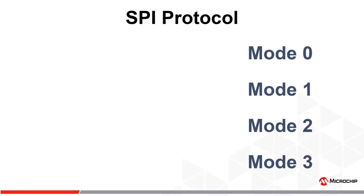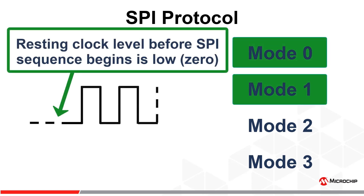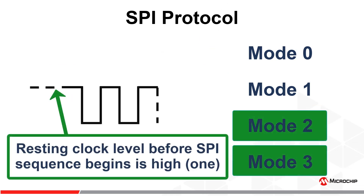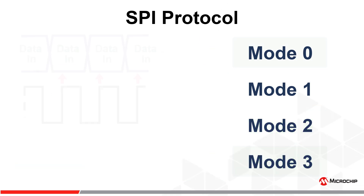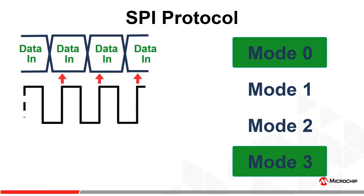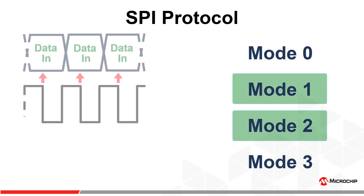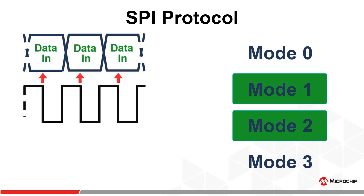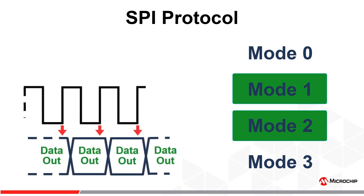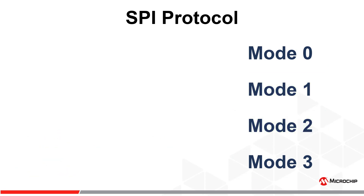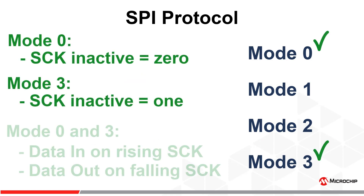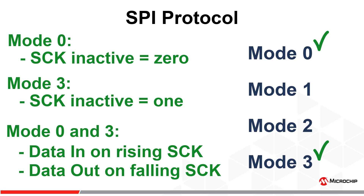SPI protocol defines four modes of operation related to the clock default level, and which clock edges data is sampled on and driven out on. The clock default level for mode 0 and mode 1 is low, and for mode 2 and mode 3 is high. Mode 0 and mode 3 sample data on the rising SCK edges and drive data out on the falling SCK edges, whereas for mode 1 and mode 2, data is sampled on the falling edges and driven out on the rising edges. By far the most common SPI modes are mode 0 and mode 3, since most SPI devices honor these two modes.